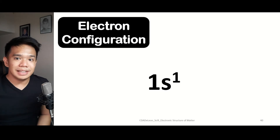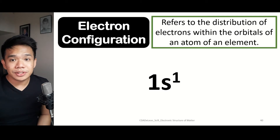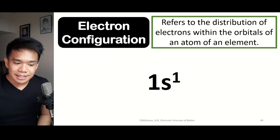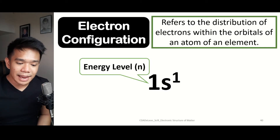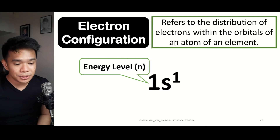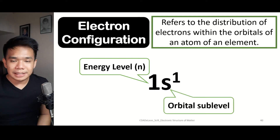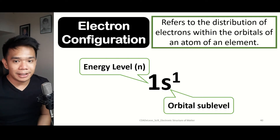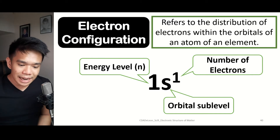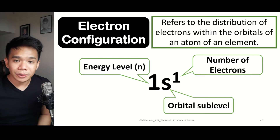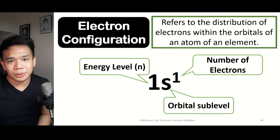Now let us go to the idea of electron configuration, which refers to how electrons are distributed within the orbitals of an atom. An example is the electron configuration for hydrogen, which has an atomic number of 1. There are certain symbols to consider: the energy level represented by quantum number N — for hydrogen, this is the first energy level; the orbital sublevel represented by the azimuthal quantum number L — in this case the S sublevel; and the number of electrons in the superscript, which for hydrogen is 1, since the atomic number equals the number of electrons.